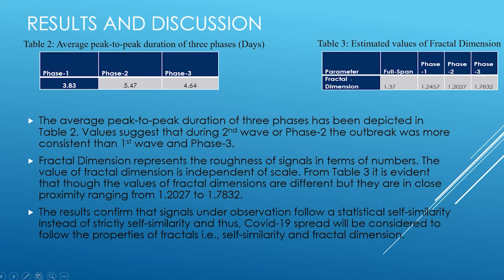Table three presents the fractal dimension, which represents the roughness of the signal in numerical terms. The value of fractal dimension is independent of scale, and though the values differ across phases, they are in close proximity ranging from 1.2427 to 1.7832. These results confirm observation of statistical self-similarity rather than strict self-similarity, suggesting that COVID-19 spread more closely follows the properties of fractals.